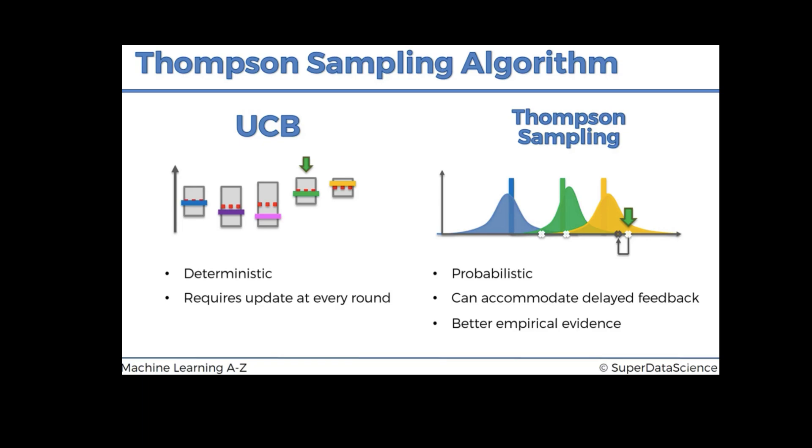UCB-based approach is a deterministic approach. You try to get an estimate of value and then refine the machine that has the highest value. Thompson sampling-based approach is a probabilistic approach. It is particularly well-suited for scenarios with delayed feedback because it maintains a probabilistic model of the reward from each arm and updates its beliefs iteratively.